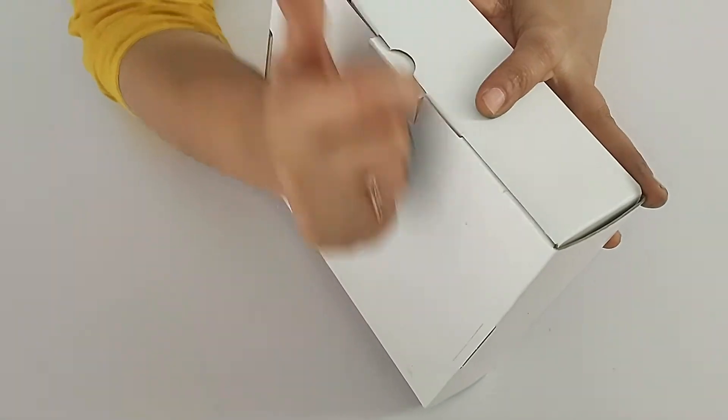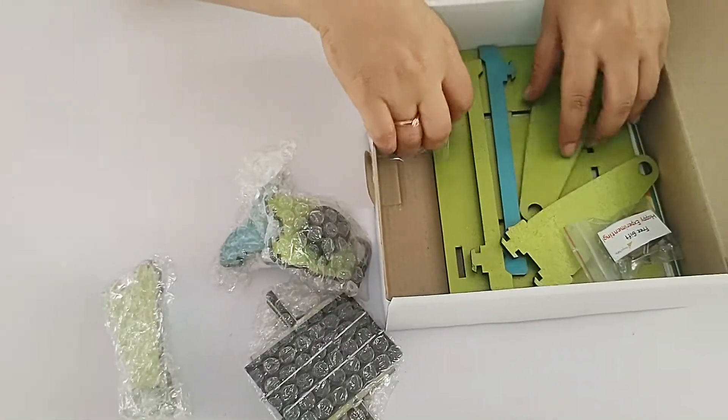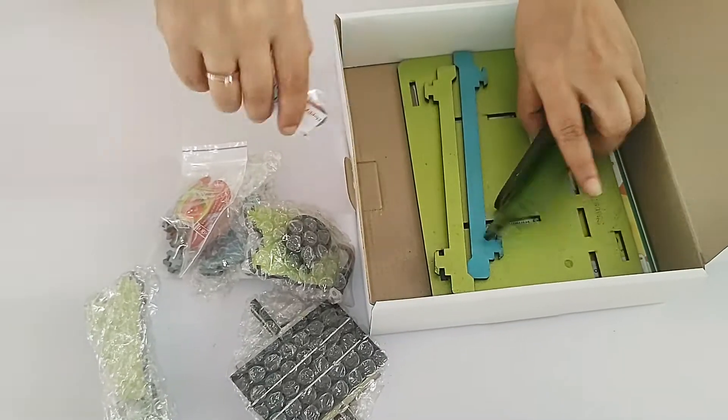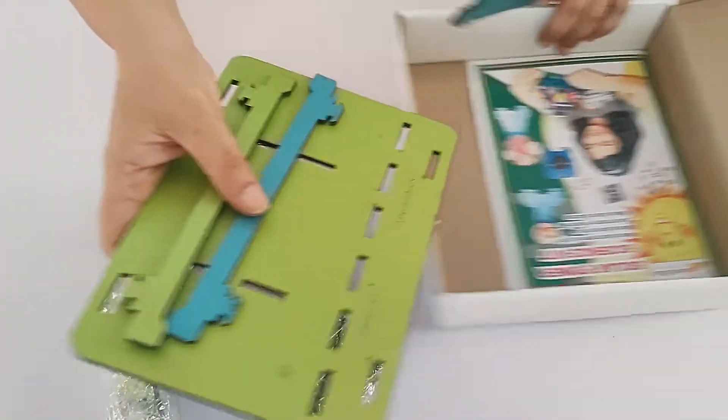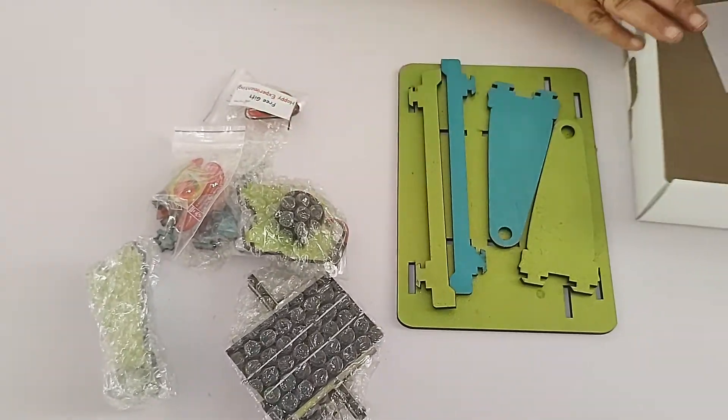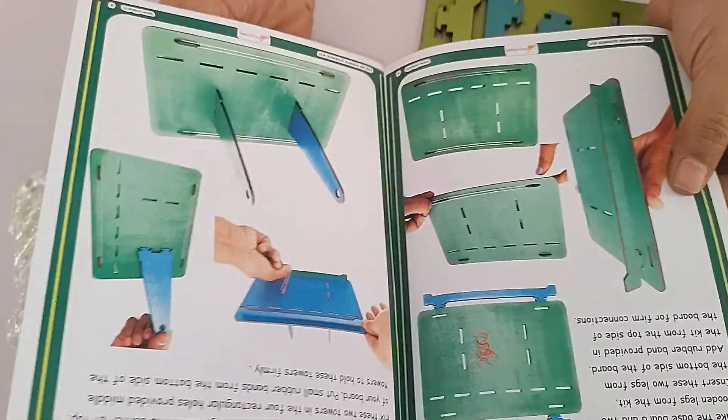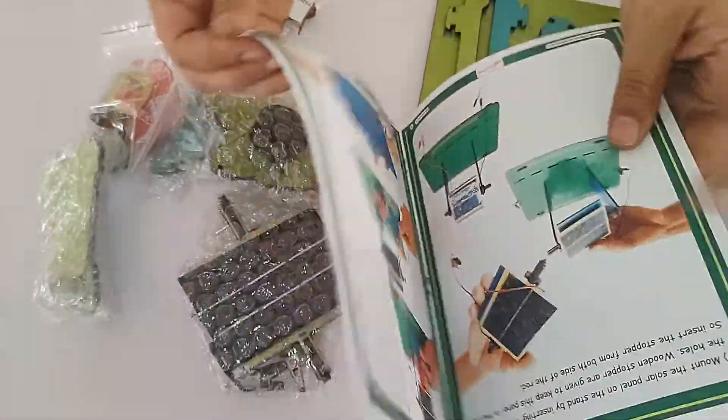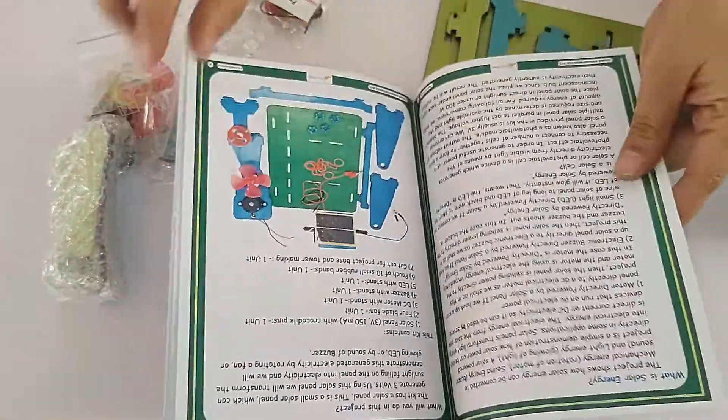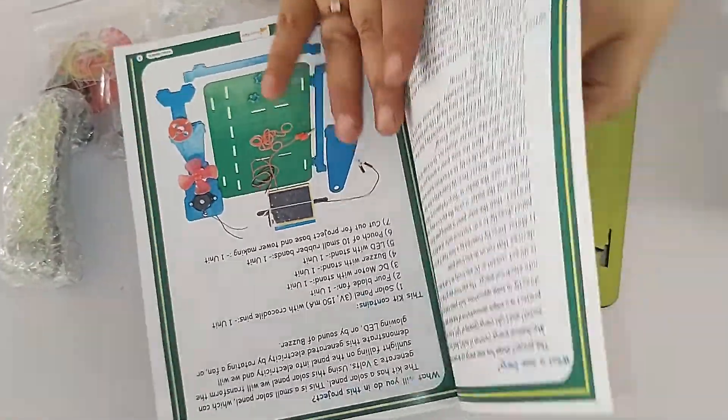Let's see what all content we're going to get in this box. This is the cutout of the base, our instruction manual, a colorful instruction manual with stepwise instructions provided in the book. Along with this, how solar panel works, what is a solar cell, all these things are mentioned in the book.